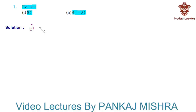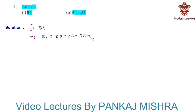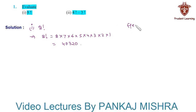In the first section we have to find the value of 8 factorial. We know that 8! is the product of the first 8 natural numbers, that is 8 × 7 × 6 × 5 × 4 × 3 × 2 × 1. When we multiply these numbers we get 40,320. Hence the value of 8 factorial is equal to 40,320.